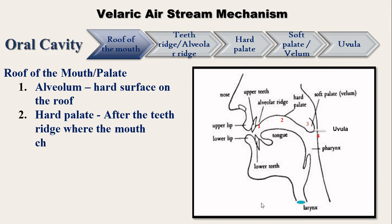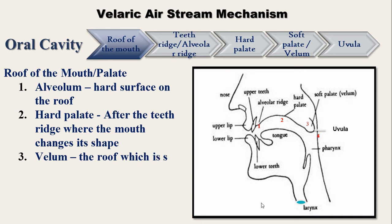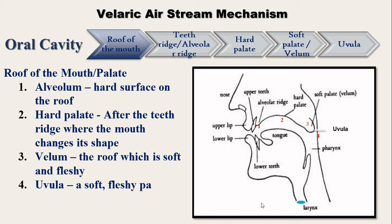Next we have the soft palate. After the hard palate, the roof of the mouth becomes somewhat soft and fleshy. This part of the mouth is called the soft palate. It is also called the velum. After the soft palate, there is a soft fleshy part hanging loose. This is called the uvula. In Tamil we call it ulnakul.